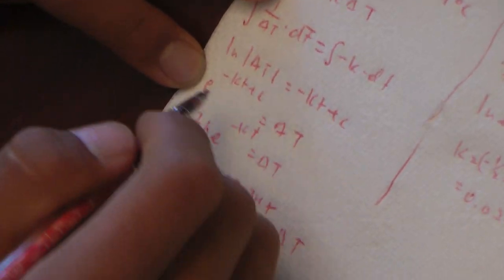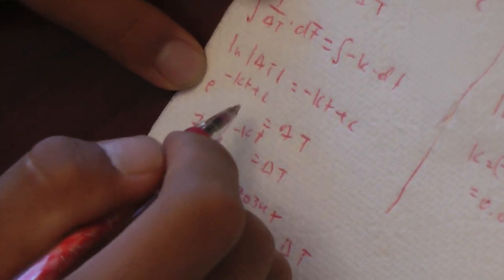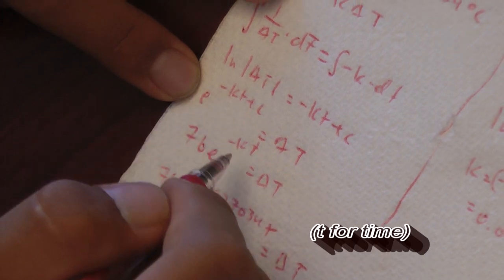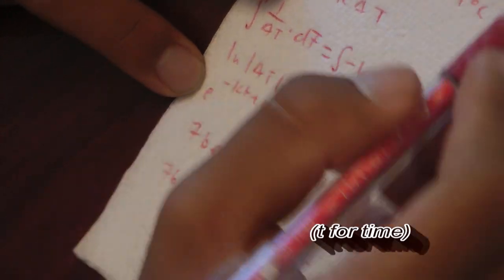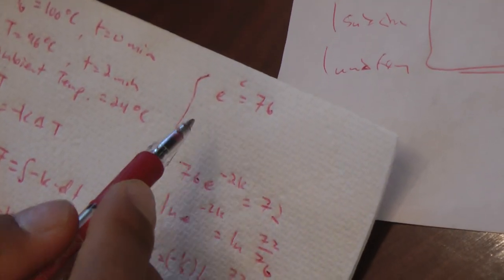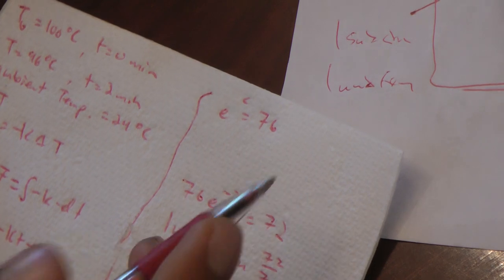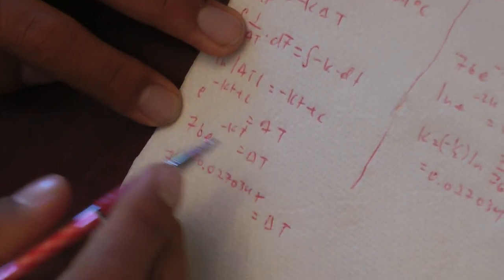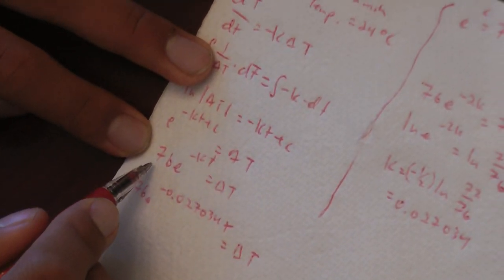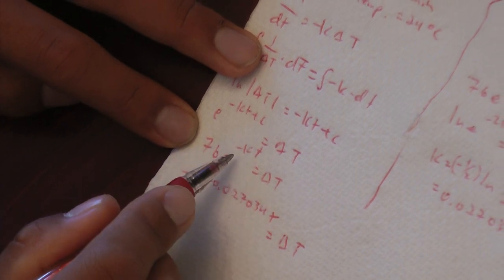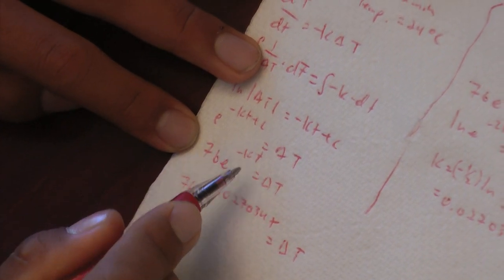C is pretty easy because once you plug in zero for t, you can get e to the C equals 76, and that's actually better for our purposes. So now we have the equation with the constant of integration plugged in, and now we just have to find k.